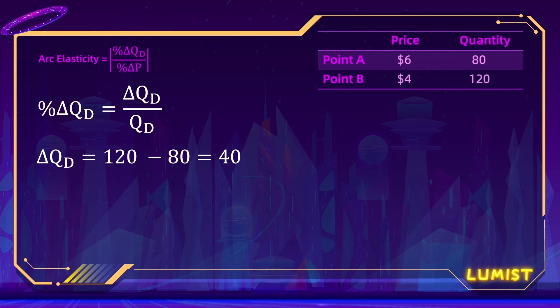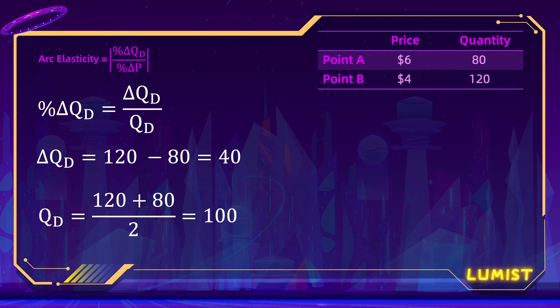What about the denominator, our QD? Should it be 80, the doughnuts that we started with, or 120, the doughnuts we ended with? Well, for accuracy, we use the average of these two quantities, which should be 100.